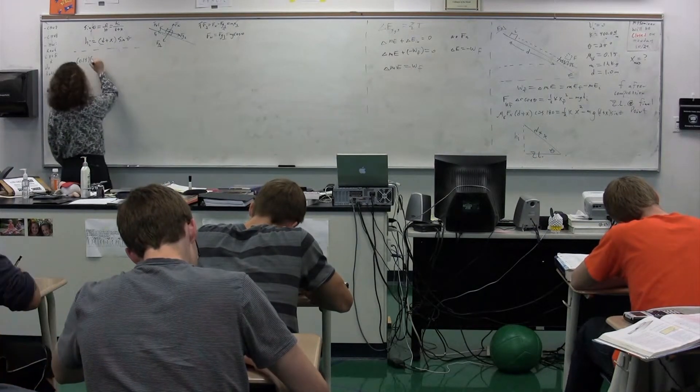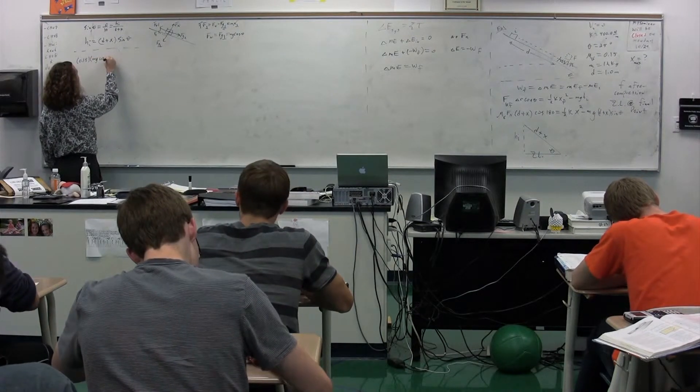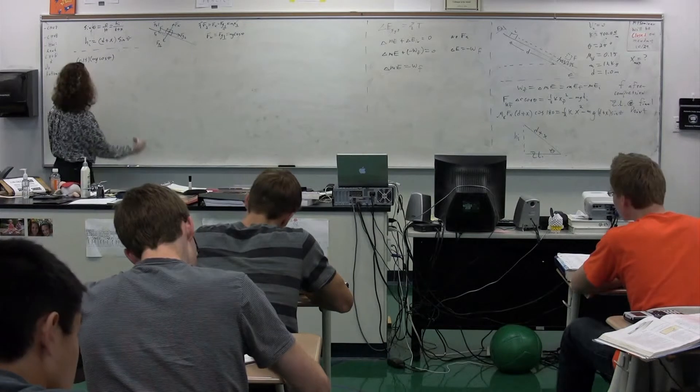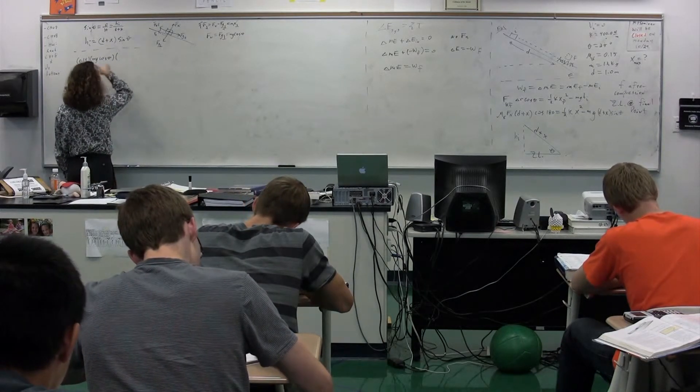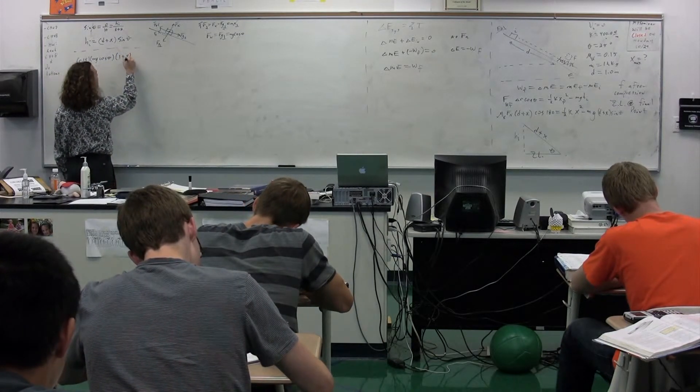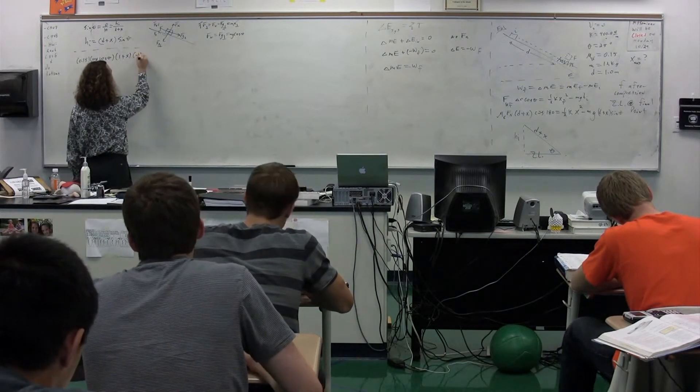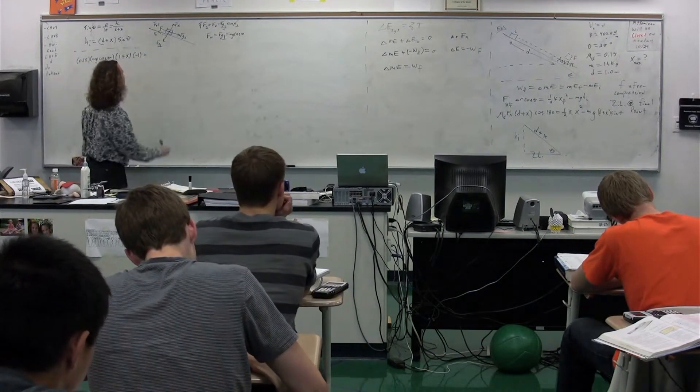So force normal, we're going to do letters, mg cosine theta. Travis, keep going. D? One. Plus x, which is what we're looking for, cosine of 180 is negative one.